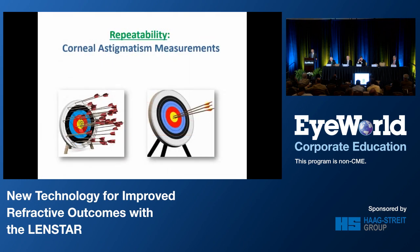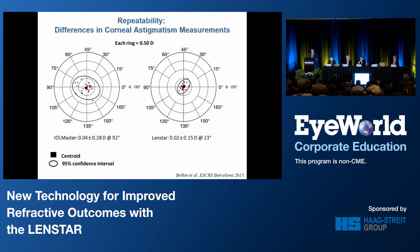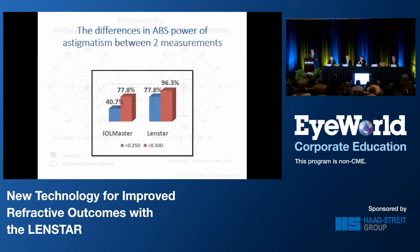For our primary device, we would like to use the most accurate machine available, but good repeatability is essential for high accuracy. We evaluated the differences in corneal astigmatism measurements in 28 right eyes of healthy volunteers one week apart, using the IOLMaster 500 and the Lensstar devices for the same eyes. In a perfect world, all these dots should be plotted against the zero mark, but this is not the case for either device. However, the Lensstar had a significantly lower variance compared to the IOLMaster. When the Lensstar was used, more than 96% of eyes had a difference below 0.5 diopters between the two measurements, as opposed to about 78% with the IOLMaster.